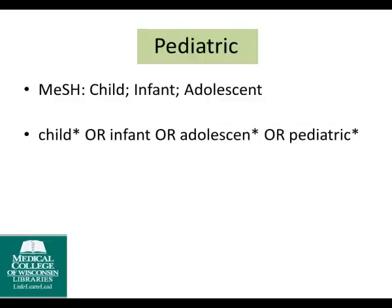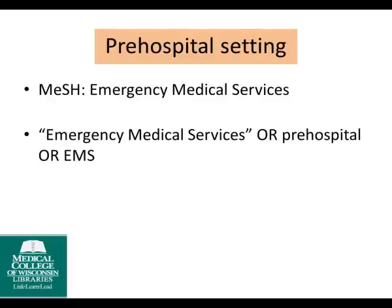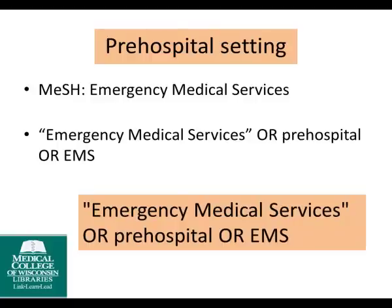For the topic of a pediatric-aged patient, I identified the MeSH terms of child, infant, and adolescent. Truncation will come in handy to find the plural variations of these words — truncating child finds child or children, and truncating adolescence finds adolescent or adolescence. So for this search strategy, I will use child* or infant* or pediatric* or adolescen*. For our final topic of the pre-hospital setting, I identified the MeSH term emergency medical services. I also found that pre-hospital or EMS are other words to describe this topic, so I'll use emergency medical services with quotations, or pre-hospital, or EMS.